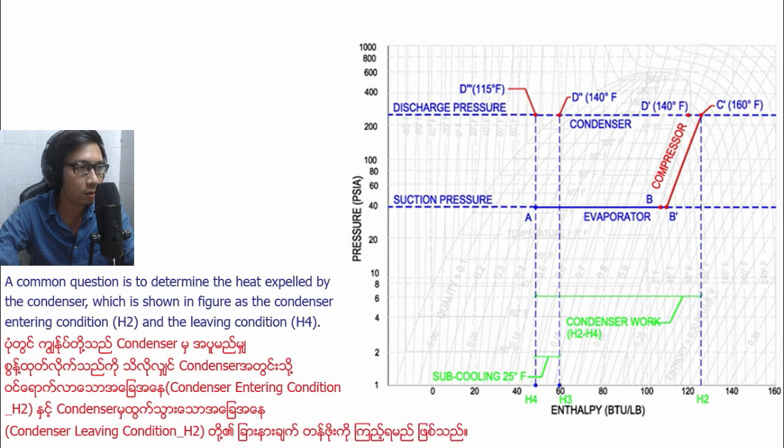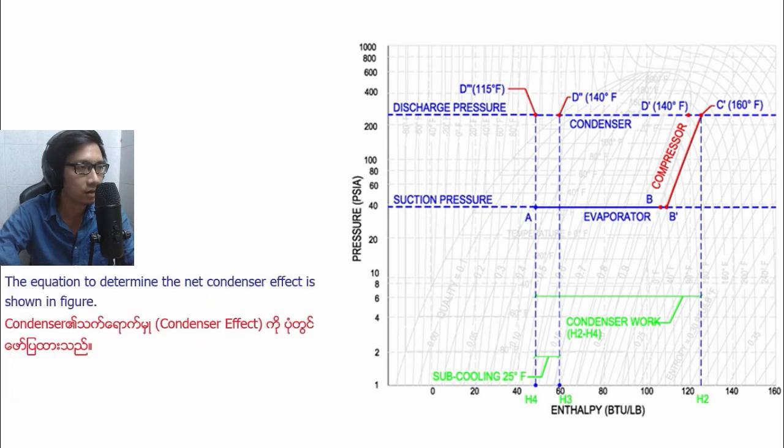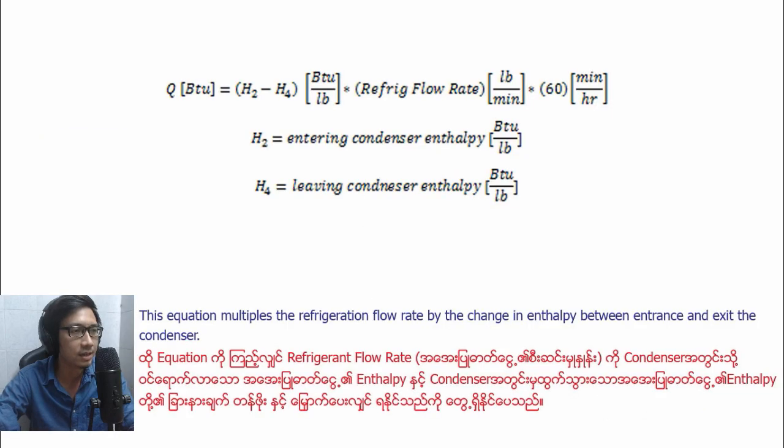A common question is to determine the heat rejected by the condenser, which is shown in figure as the condenser entering condition H2 and the leaving condition H4. The equation to determine the net condenser effect is shown in figure. This equation multiplies the refrigerant flow rate by the change in enthalpy between entrance and exit the condenser.